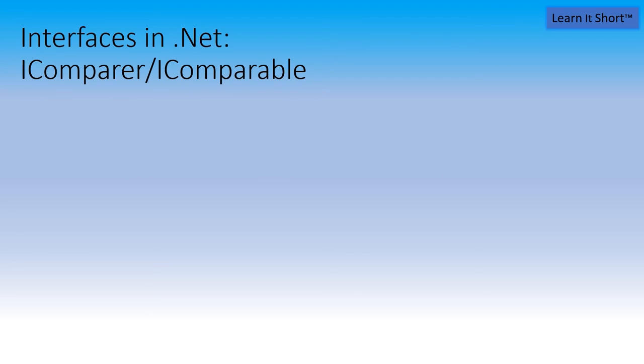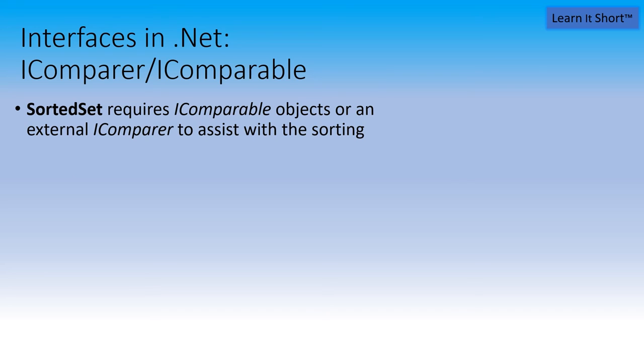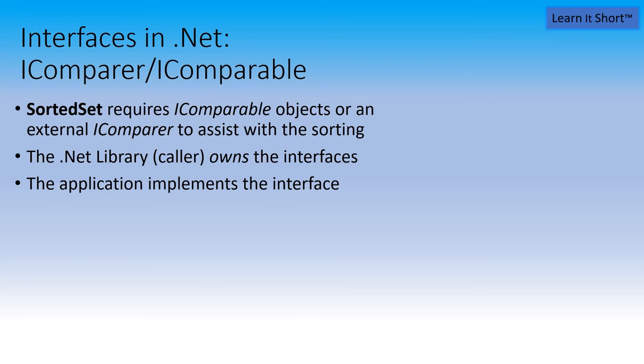There are also some interfaces used in dotnet for handling sorted sets, sorted collections. In fact, the class sorted set requires either an IComparable object type or an IComparer external comparison comparator in order to assist with the sorting. The dotnet library, the caller, owns those two interfaces and the application developer will implement that interface in order to leverage the more complex algorithm that sorted set provides.